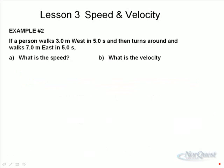In example number two, the same person, instead of walking three meters east to begin with, walks three meters west, then turns around and walks seven meters east in five seconds. In this case, what's the speed? What's the velocity? Again, drawing a picture helps.